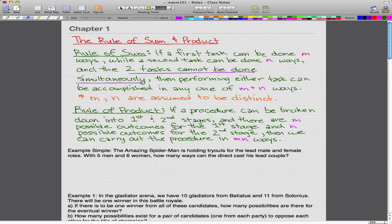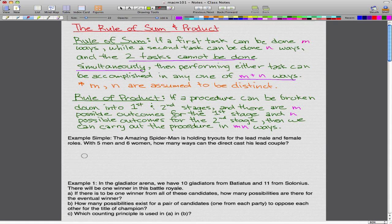That's pretty simple and we'll go through a couple of examples. The second part is the rule of product. If a procedure can be broken down into first and second stages and there are m possible outcomes for the first stage and n possible outcomes for the second stage, then we can carry out the procedure in m times n ways.